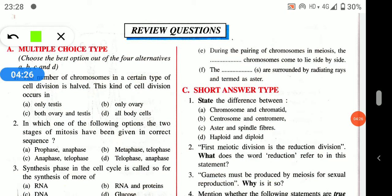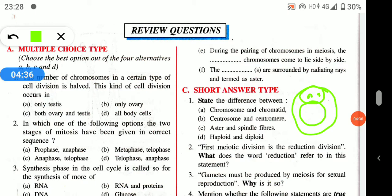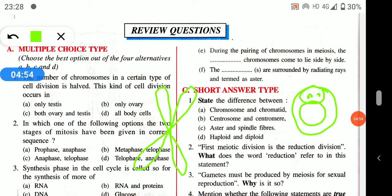The next question: what is the difference between centrosome and centromere? The centrosome is a cell organelle present near the nucleus in animal cells, consisting of two centrioles. The centromere is the point where the two sister chromatids are attached — that point of attachment is called the centromere.